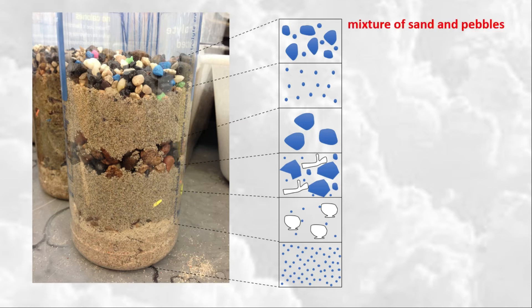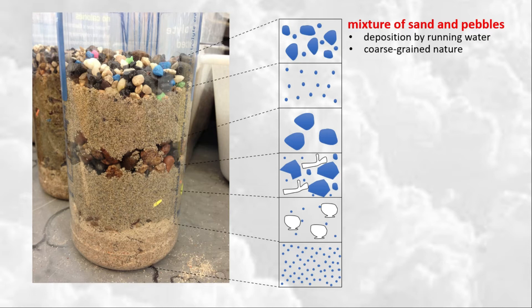The first layer in the stratigraphic column is a mixture of sand and pebbles. This layer suggests transport and deposition by running water. The coarse-grained nature or texture of the sediment means it cannot be transported by wind. The rounded pebbles indicate a considerable duration of transport, so river sedimentation can produce similar deposits. Roundness is defined as the degree of smoothing of the surface of a sediment due to abrasion.